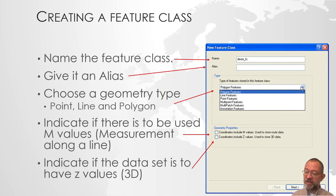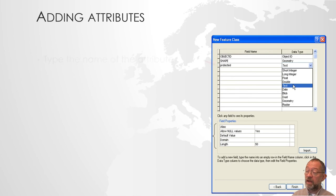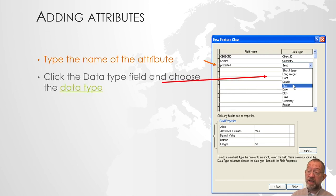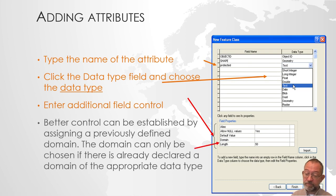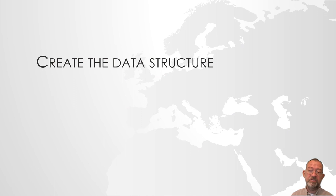I have now created my data structure. I have given my feature classes names, assigned them points and polygons geometry, and considered whether to use M and Z data. I have entered the attributes — giving each a name, choosing a data type, and entering additional controls such as whether nulls are allowed, field length, and domain assignment. All of these things have been done and I'm basically ready to start collecting data, which will be covered in another video.